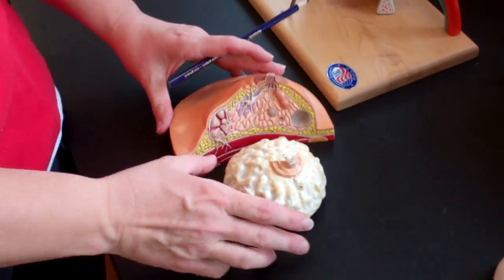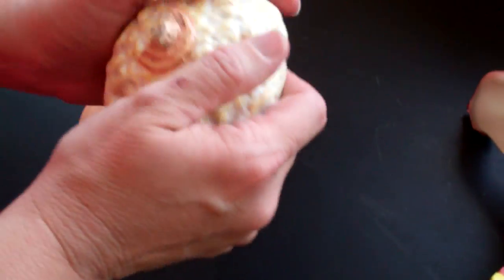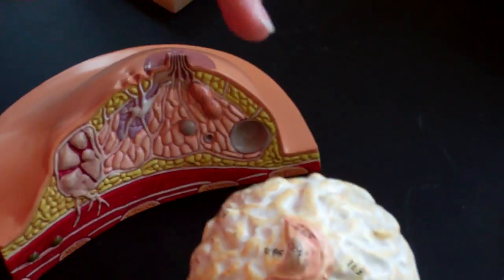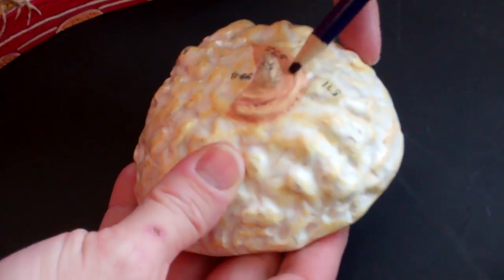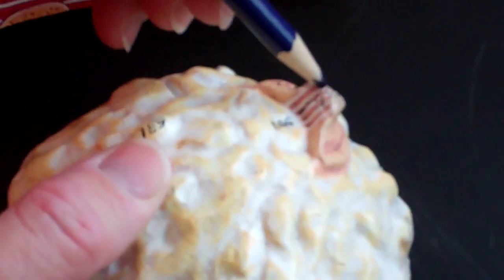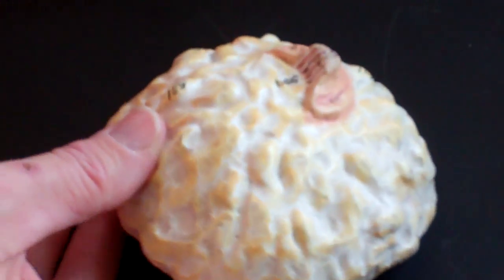When it comes to the mammary glands, this is an older model. Really, this is mostly adipose that they're representing here. And then this is the areola, the nipple, and the lactiferous ducts are actually in the white stripes here. That's where the milk's going to actually come out of the breast.